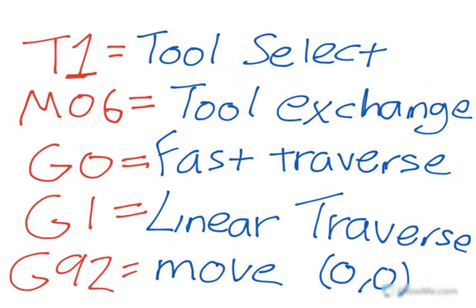For starters, we have T1, which is going to select the tool that we're going to create. Then we need to have an M06, which is basically a tool exchange. So first we're going to select the tool, and then we're going to tell the machine to actually change to that tool itself.